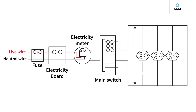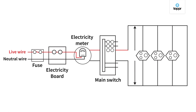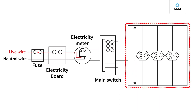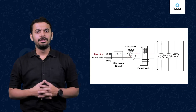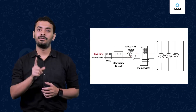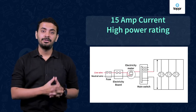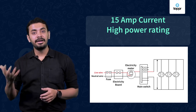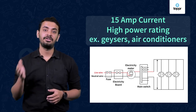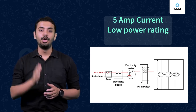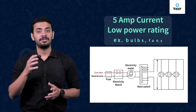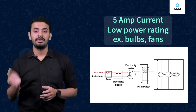In our houses these two wires pass into the electricity board through the main fuse, and supply electricity to separate circuits in the house through the main switch. Often two circuits are used: one for 15 ampere current rating for appliances with high power ratings such as geysers and air conditioners, and the other for 5 ampere current flow for low power appliances such as bulbs and fans.